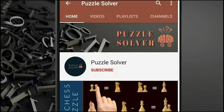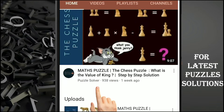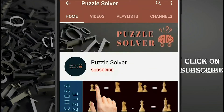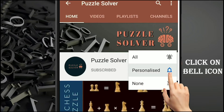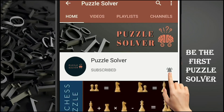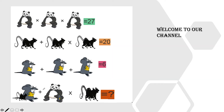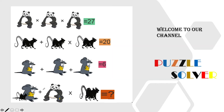Hey friends, for the latest puzzle solution please click on the subscribe button and click on the bell icon to be the first puzzle solver. Welcome to your favorite channel, Puzzle Solver. Today we have an interesting puzzle. You can see the all-time favorite panda, a black rat, and a lazy gray rat holding cheese. Let's start.